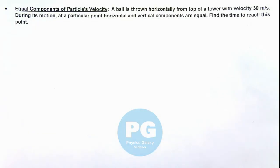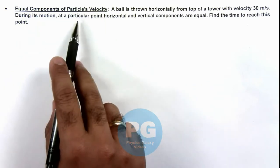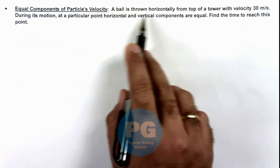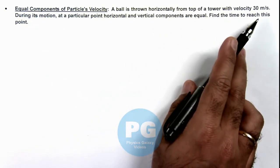In this illustration we'll study a situation where the components of a particle's velocity are equal. Here we are given that a ball is thrown horizontally from top of a tower with velocity 30 meters per second.